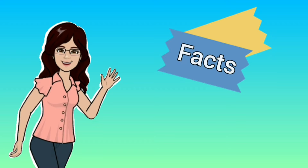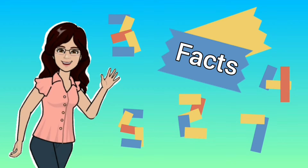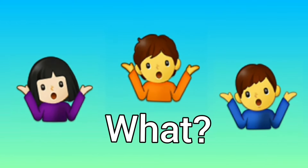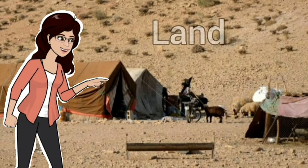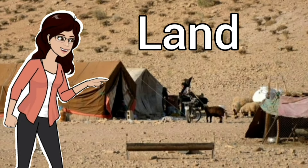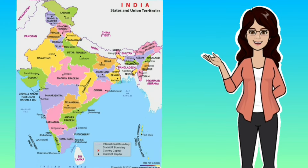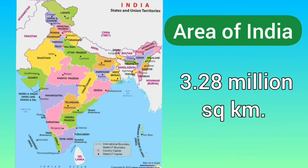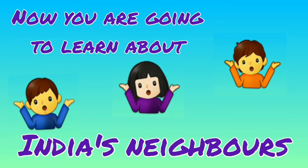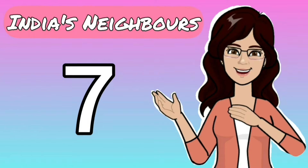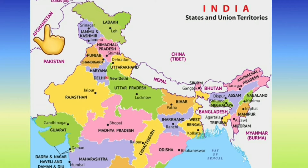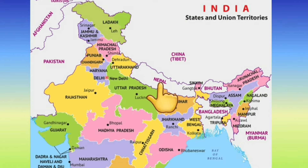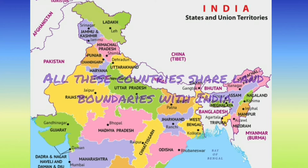Now let us deal with some important facts and figures about the land we call India. India has an area of 3.28 million square kilometers. India shares its border with seven countries, namely Pakistan, Afghanistan, China, Bhutan, Myanmar, Nepal and Bangladesh. All these countries share land boundaries with India from different sides.